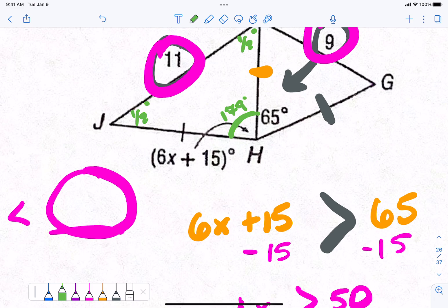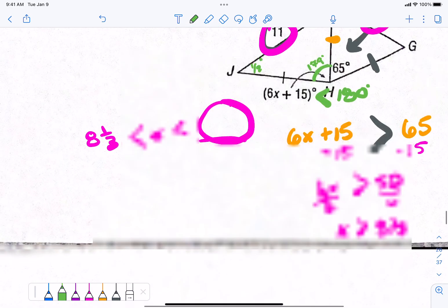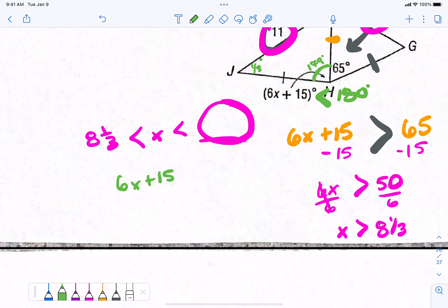Or I could just say 6x plus 15 has to be less than 180, right? I said that. Can we do that? I did it. Right? No, I don't want to do that. Let's do it. 6x plus 15 has to be less than 180. Because it's an angle in a triangle, it has to be less than 180, right? It could be 179, right?